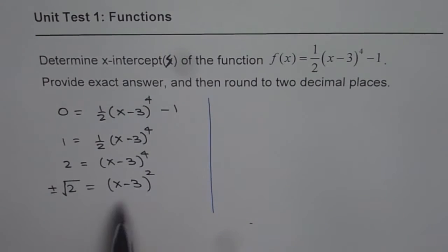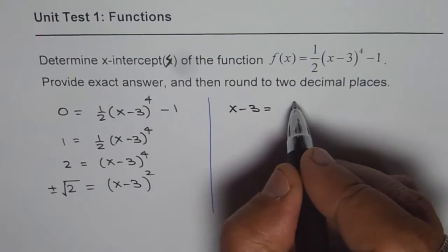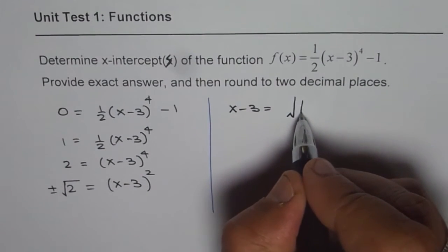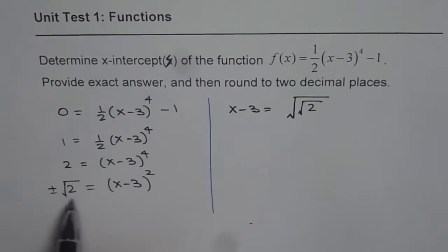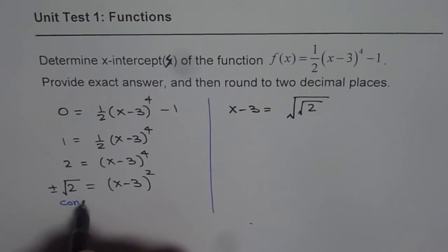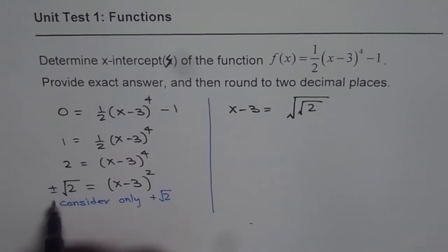So I will do it on the right side for the calculations. So what we can do is now we will again do square root. So we get x minus 3 equals square root of square root of 2. So we will only consider the positive values since the negative values, square root is imaginary. So consider only positive square root of 2.